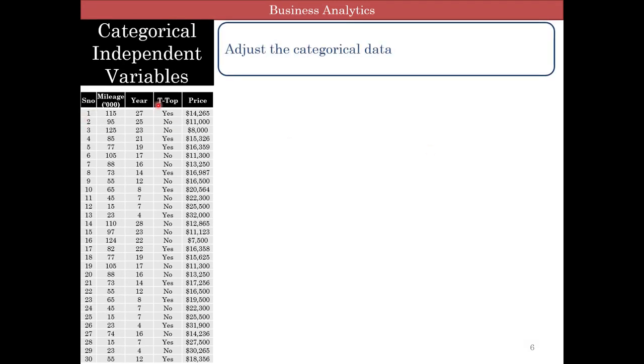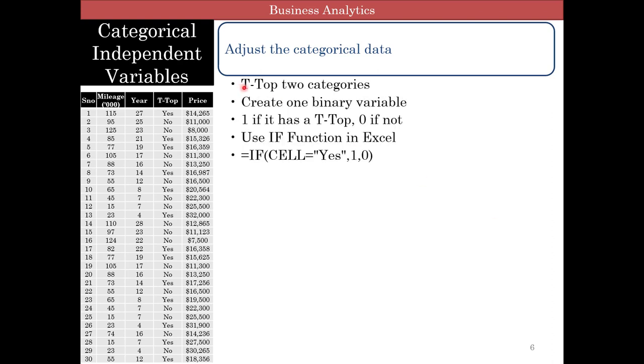So the first thing to do is to look at this categorical data, and we've got to modify it to put some numbers. We have two categories, and so 2 minus 1 is 1, so we create one binary variable. And that one binary variable is basically whether it has a T-top or not. And we can use the Excel's if function, using if the cell is equal to yes, then 1, otherwise 0, to get a 1, 0 variable there.